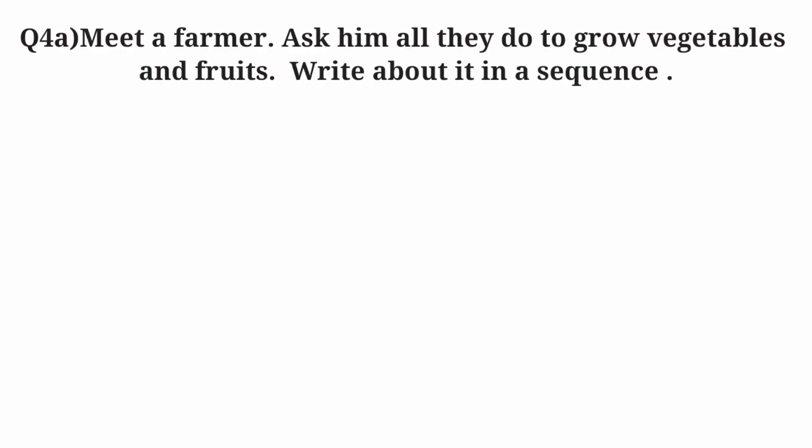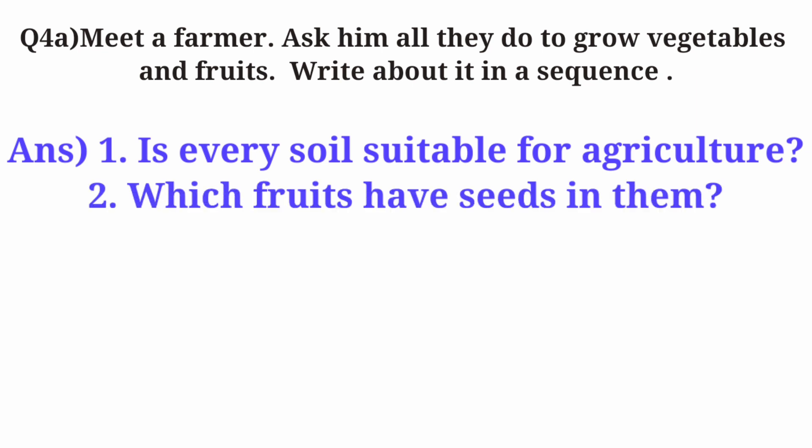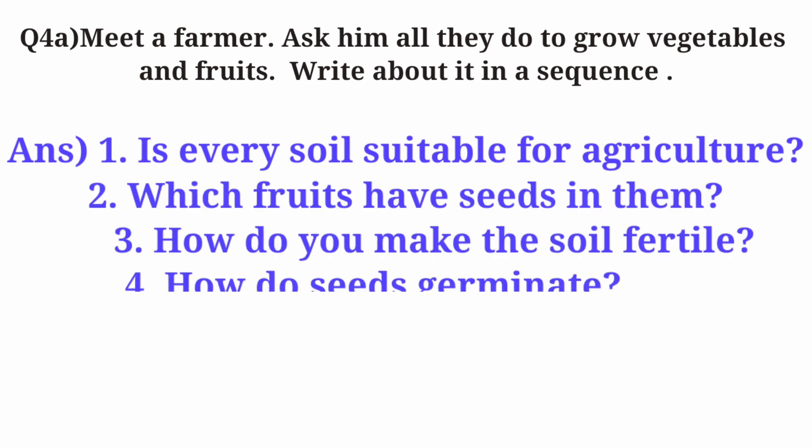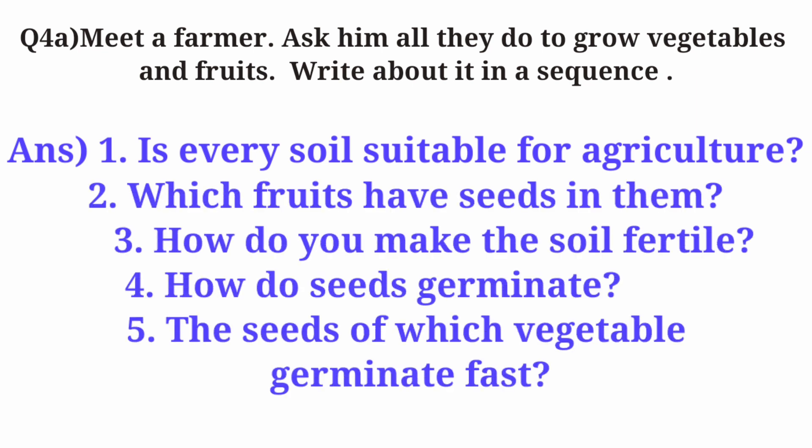Question 4. Meet a farmer. Ask him all they do to grow vegetables and fruits. Write about it in a sequence. Answer: Is every soil suitable for agriculture? Which fruits have seeds in them? How do you make the soil fertile? How do seeds germinate? The seeds of which vegetables germinate fast?